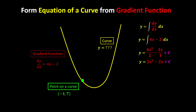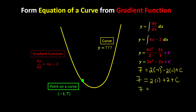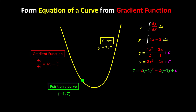So let's say y is 7 and x is negative 1. Substituting: 7 equals 2 times negative 1 squared minus 2 times negative 1 plus c. We just need to solve the linear equation. Negative 1 squared is 1, so 7 equals 2 plus 2 plus c, which gives us 7 equals 4 plus c. So c must be equal to 3.